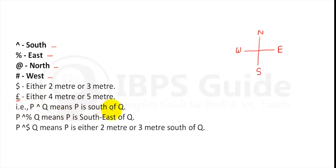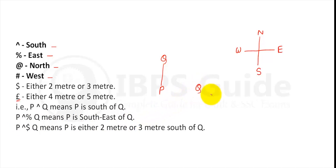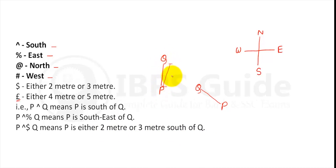Let's understand the symbols for this question. 'Cap' means south — so P cap Q means P is south of Q. 'Percentage' means southeast — so P percentage Q means P is southeast of Q. 'Dollar' means either 2 meters or 3 meters distance — so P dollar Q means the distance is either 2 or 3 meters.